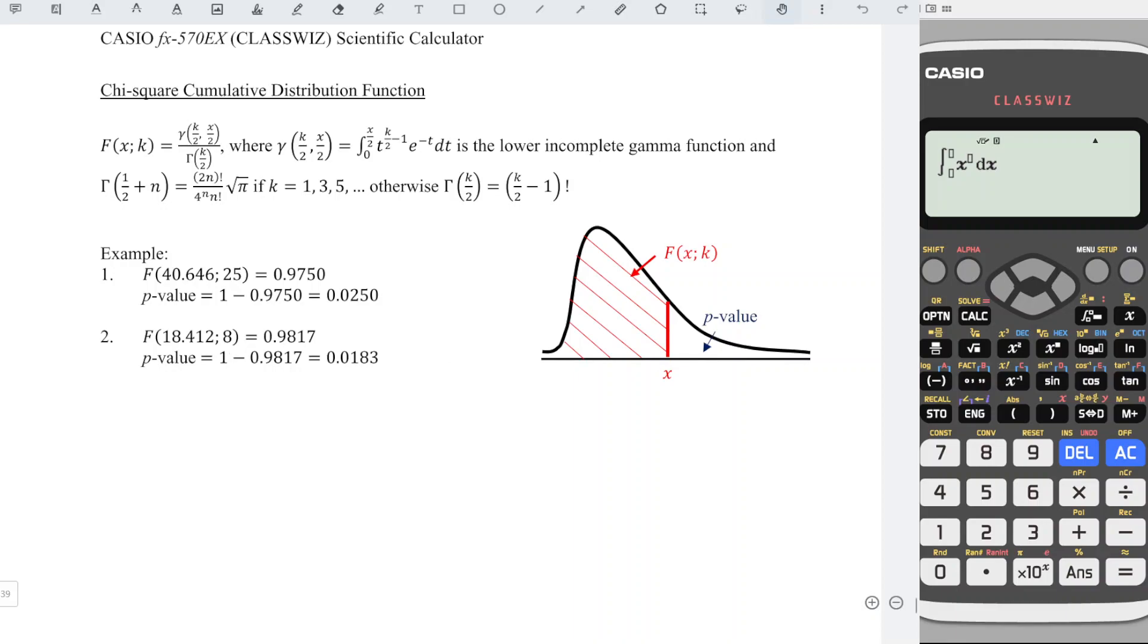k for this case is 8, so we have 8 divided by 2 and we minus 1, shift log to get e power, negative x. Write and write, lower limit zero.